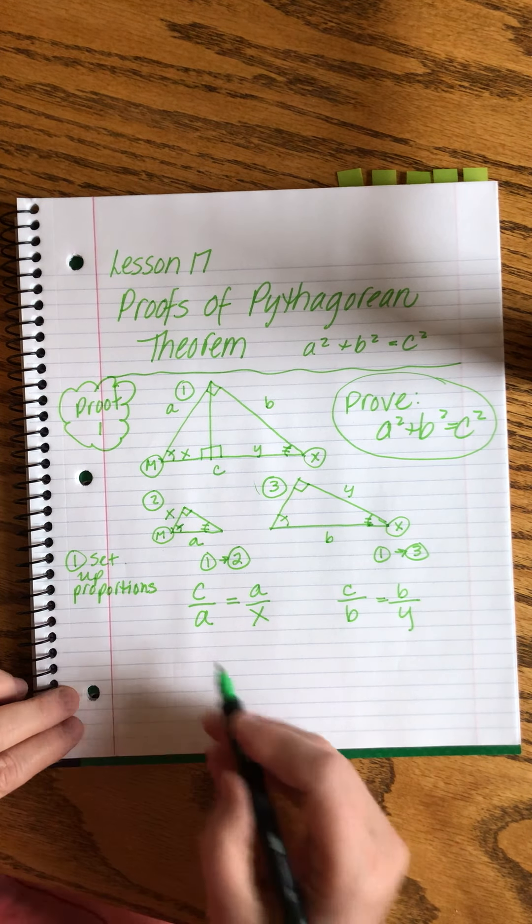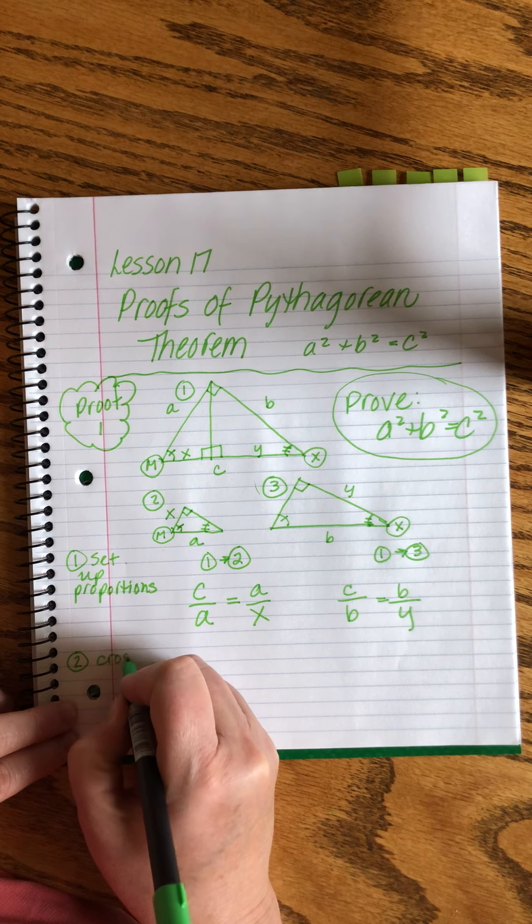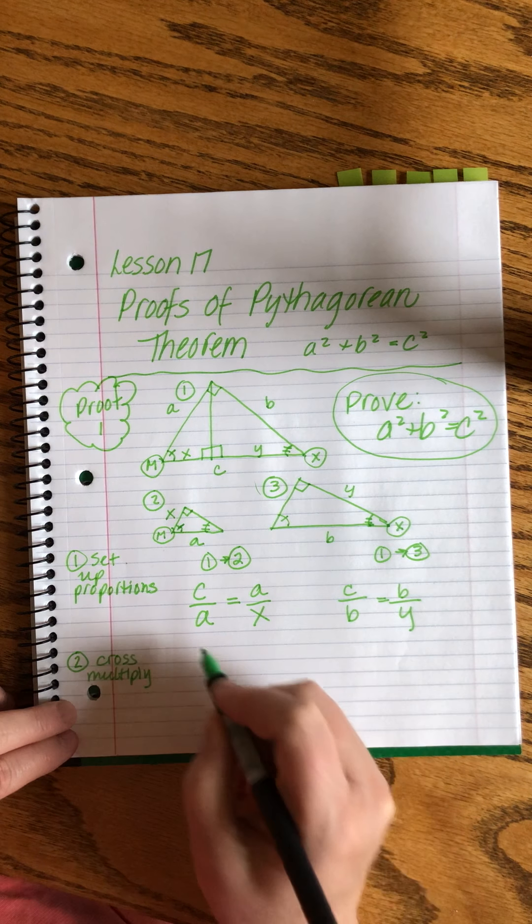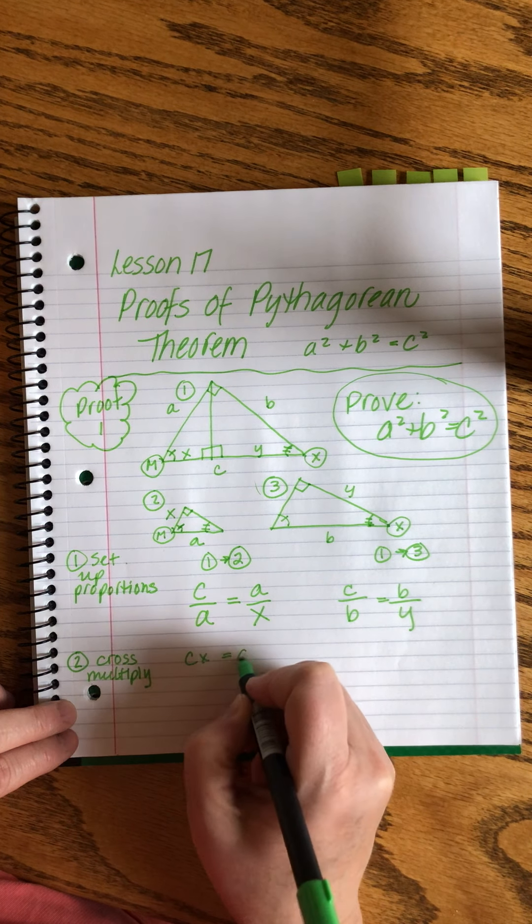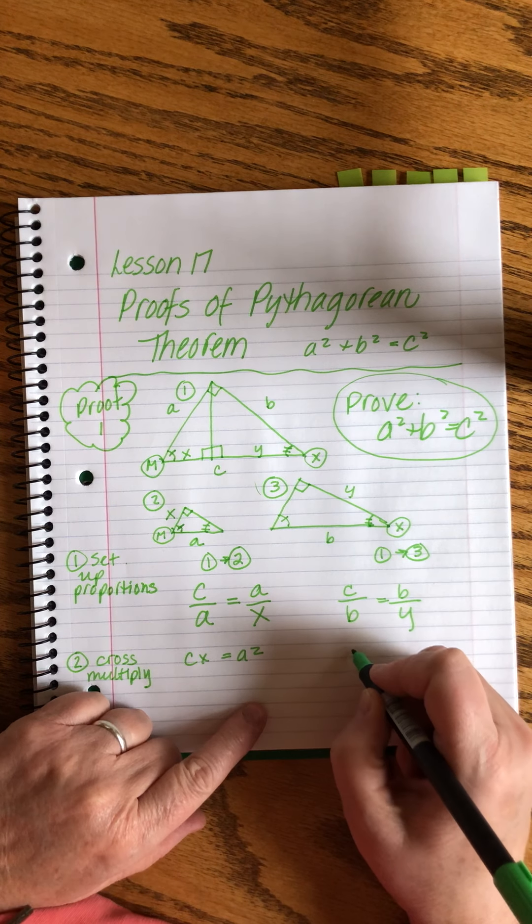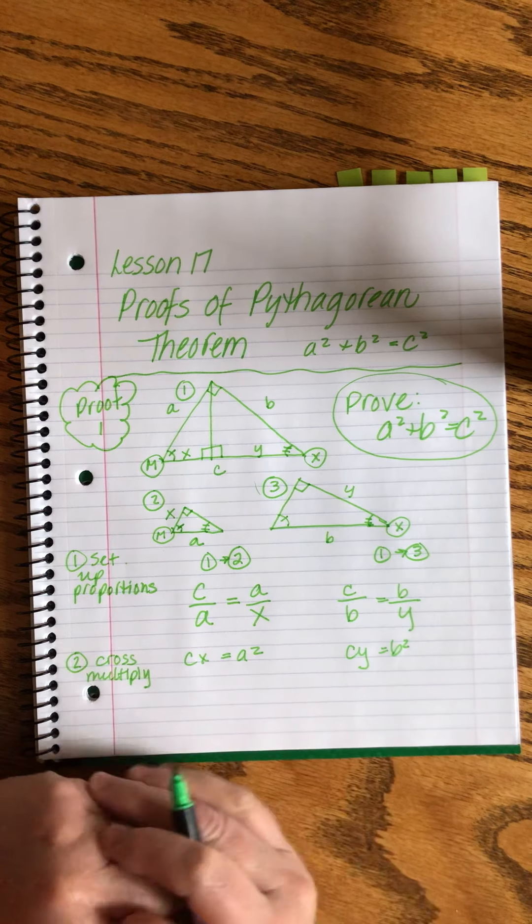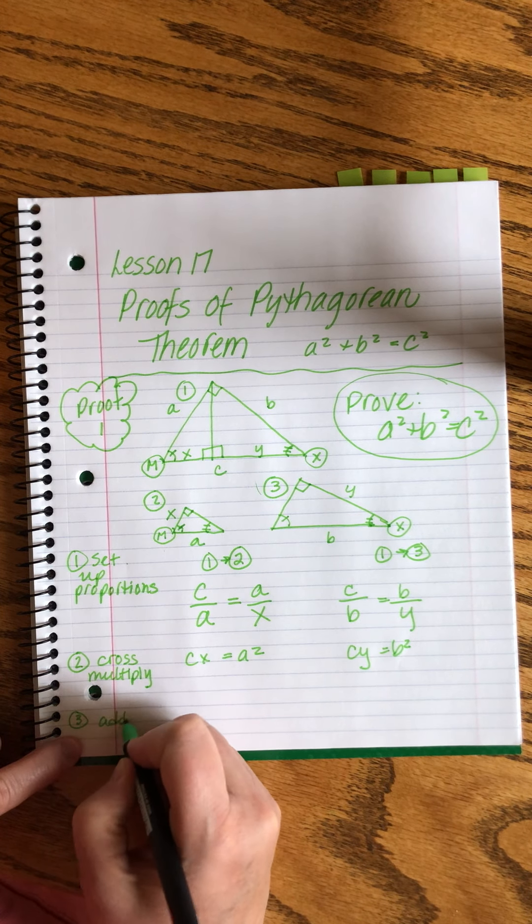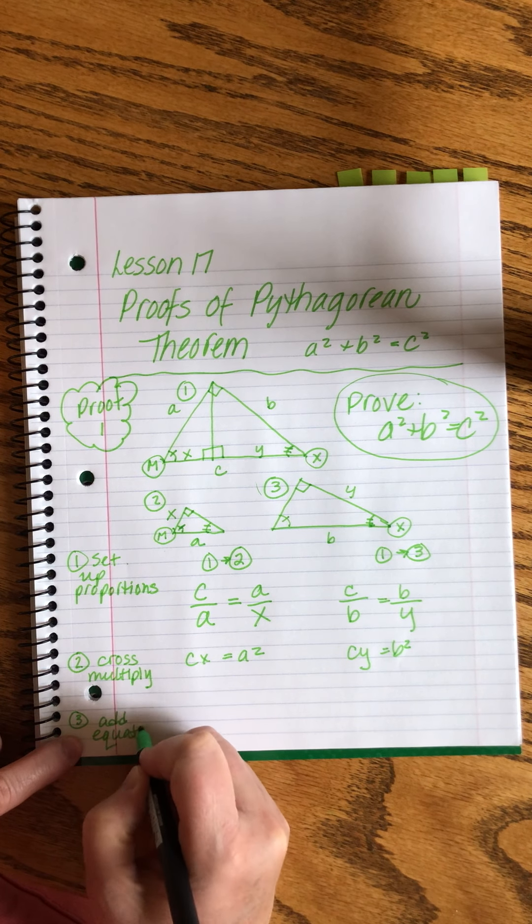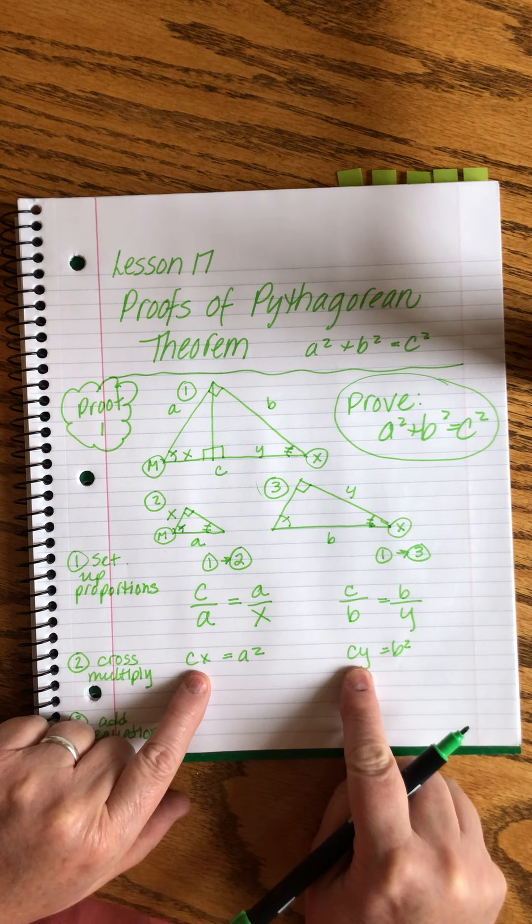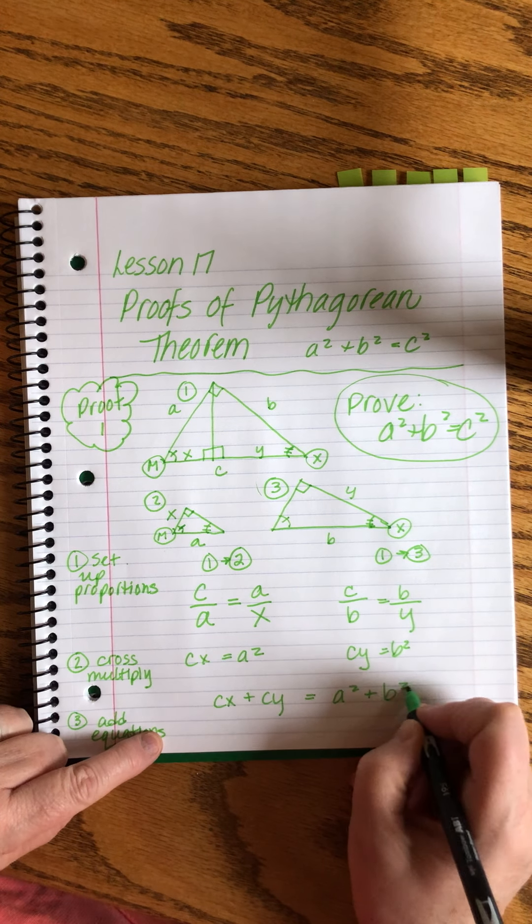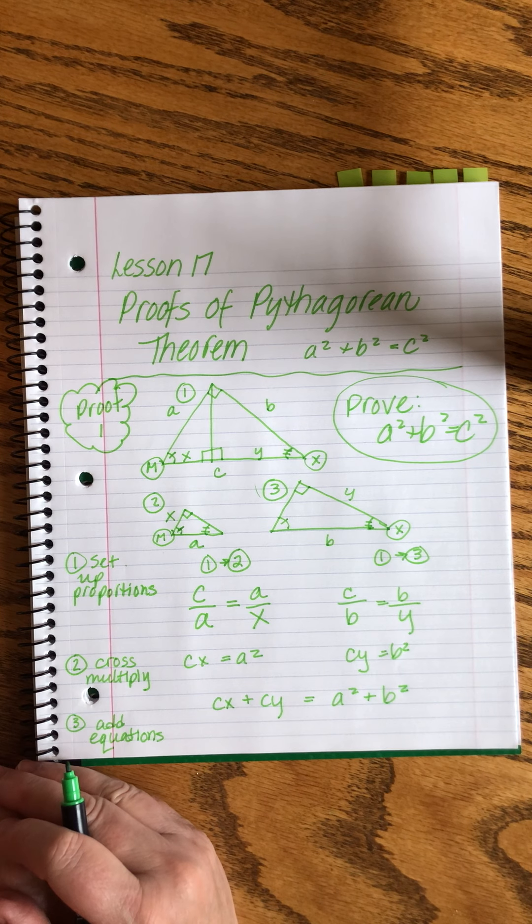So now I've set up proportions. My next step is to cross multiply and I'll get cx equals a squared. And over here, I'll get cy equals b squared. And now I'm going to do something kind of weird. I'm going to add these equations. So everything on the left will go together. Cx plus cy equals a squared plus b squared. Right?